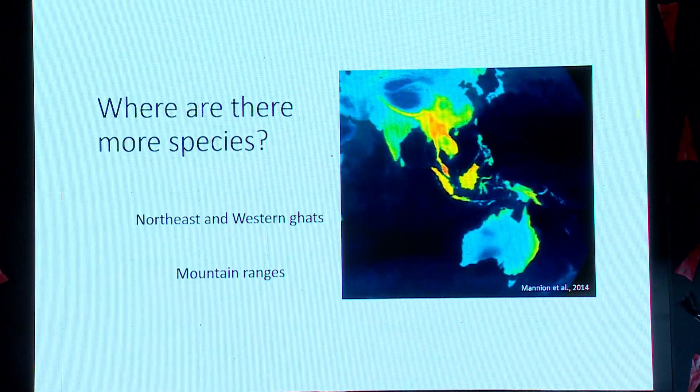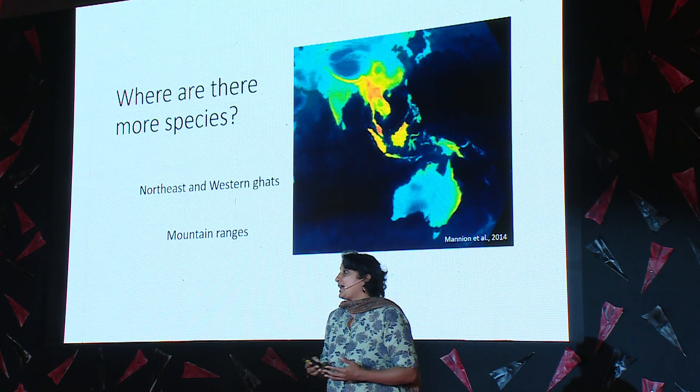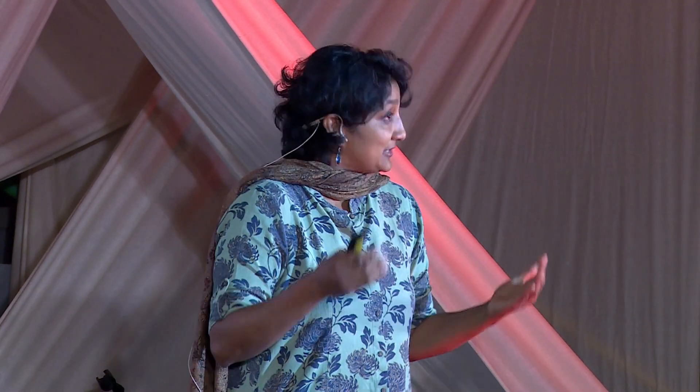Why would we have more biodiversity in any place? The reason a place has high biodiversity is because more species are being created there. But how are species created? How do they evolve? For a long time people have wondered about this. One of the concepts that Darwin and other evolutionary biologists came up with is the process of speciation — the birth of new species — and one of the most well-accepted mechanisms is called allopatry.